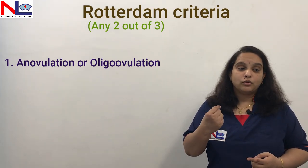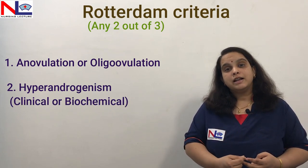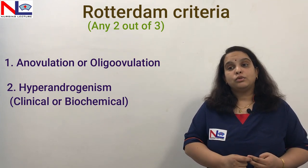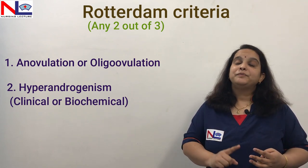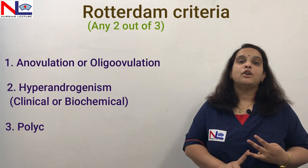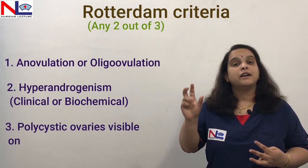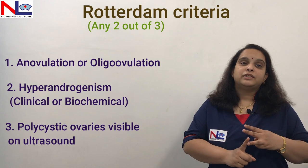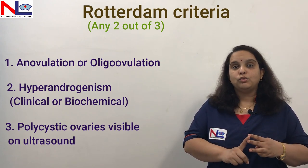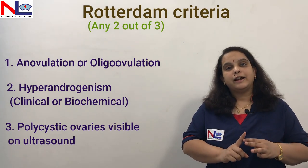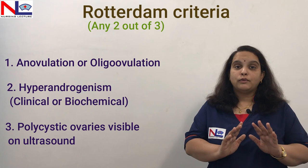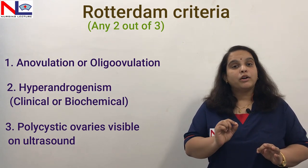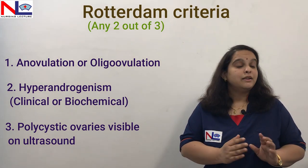The second feature is if we find any clinical or biochemical significance of hyperandrogenism, in which the androgen level is rising in women. And the third feature is the appearance of polycystic ovaries, in which many cysts appear in the ovary, detectable by ultrasound scan. Out of these three criteria, if any two significant features are found, we call it PCOS. But the key important feature among all three is hyperandrogenism.